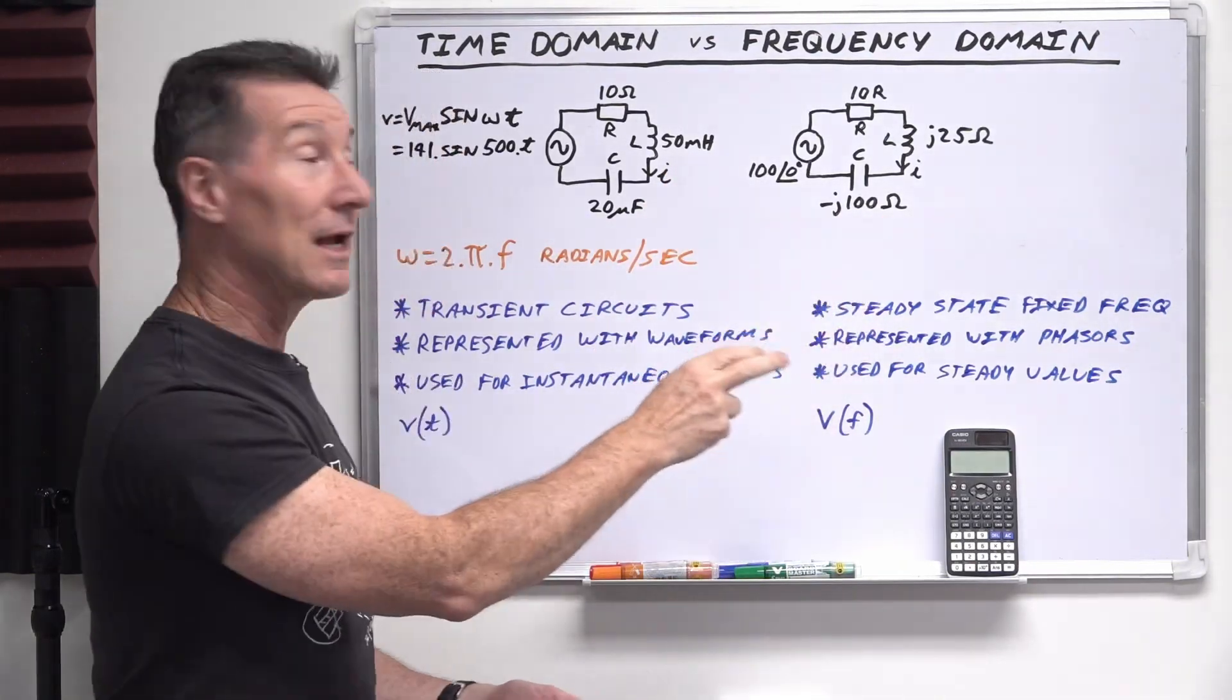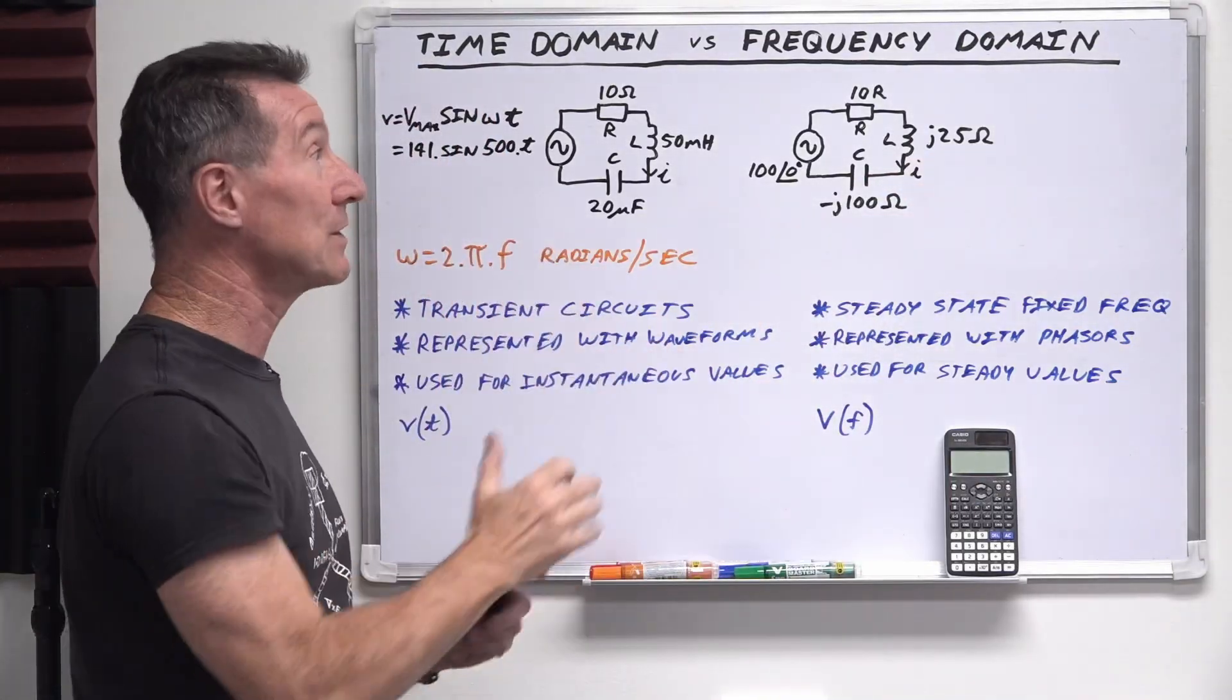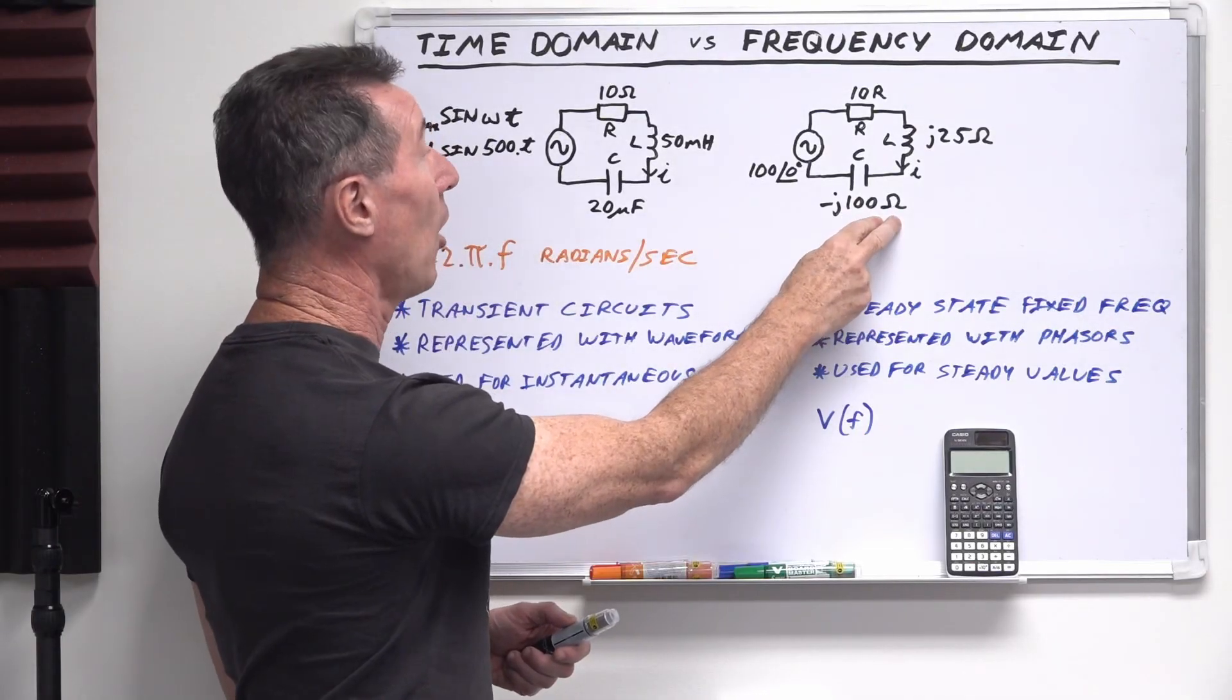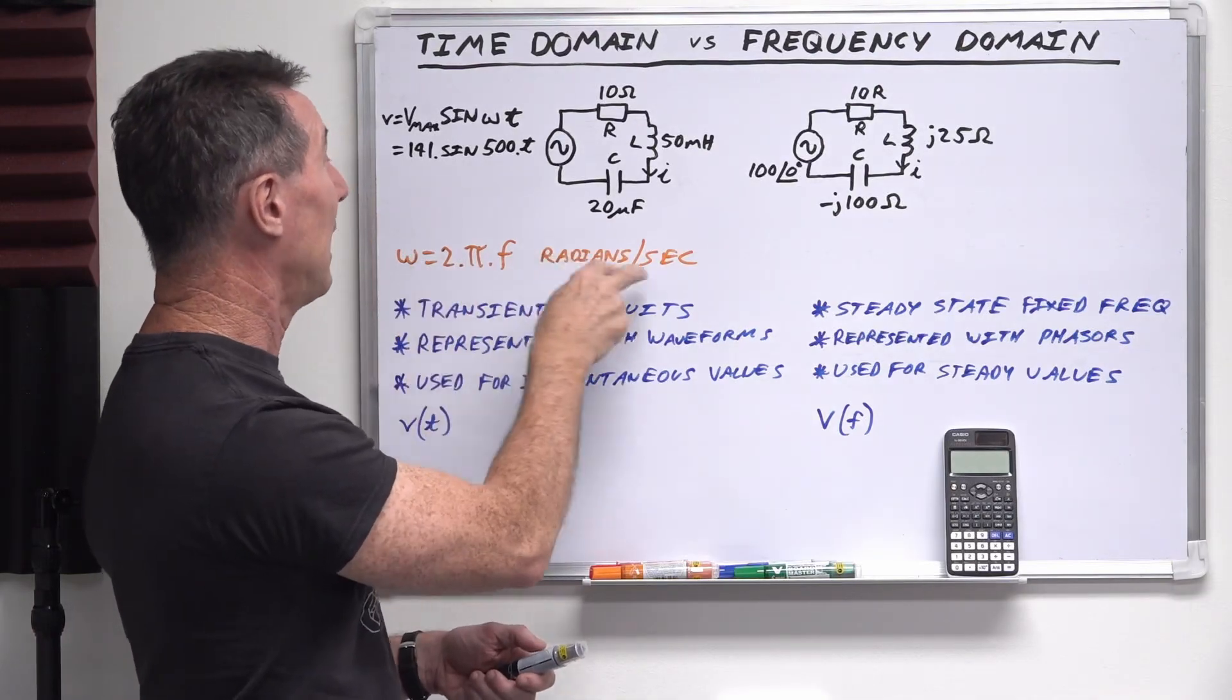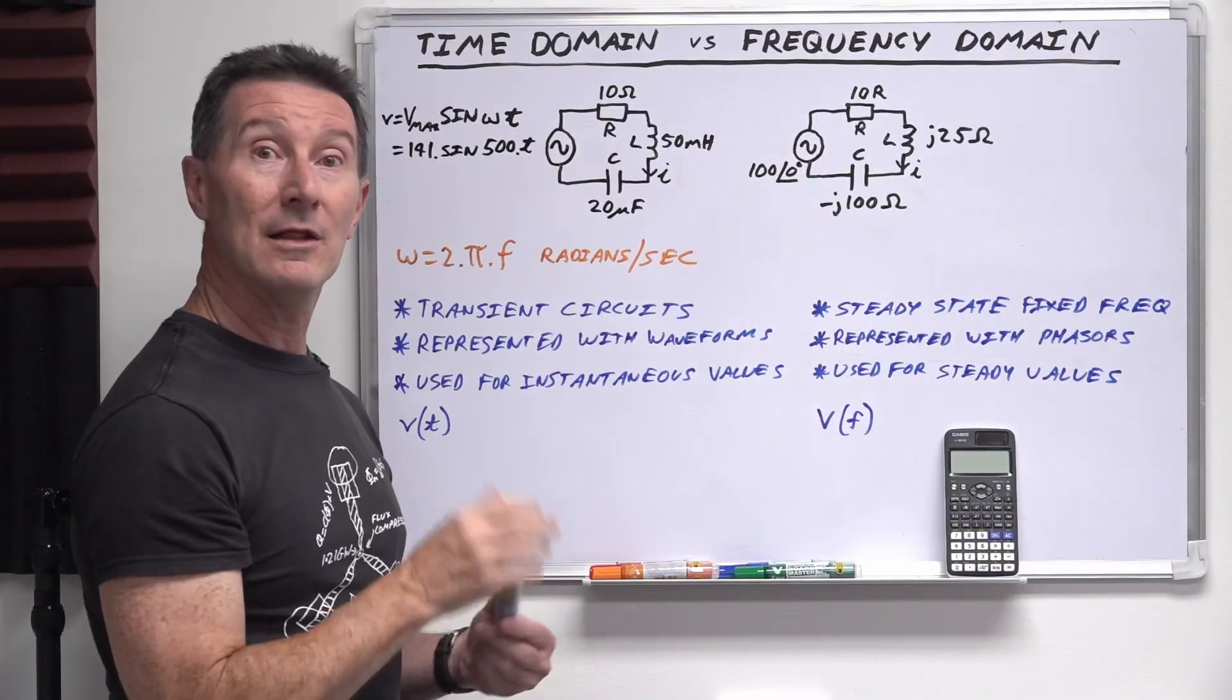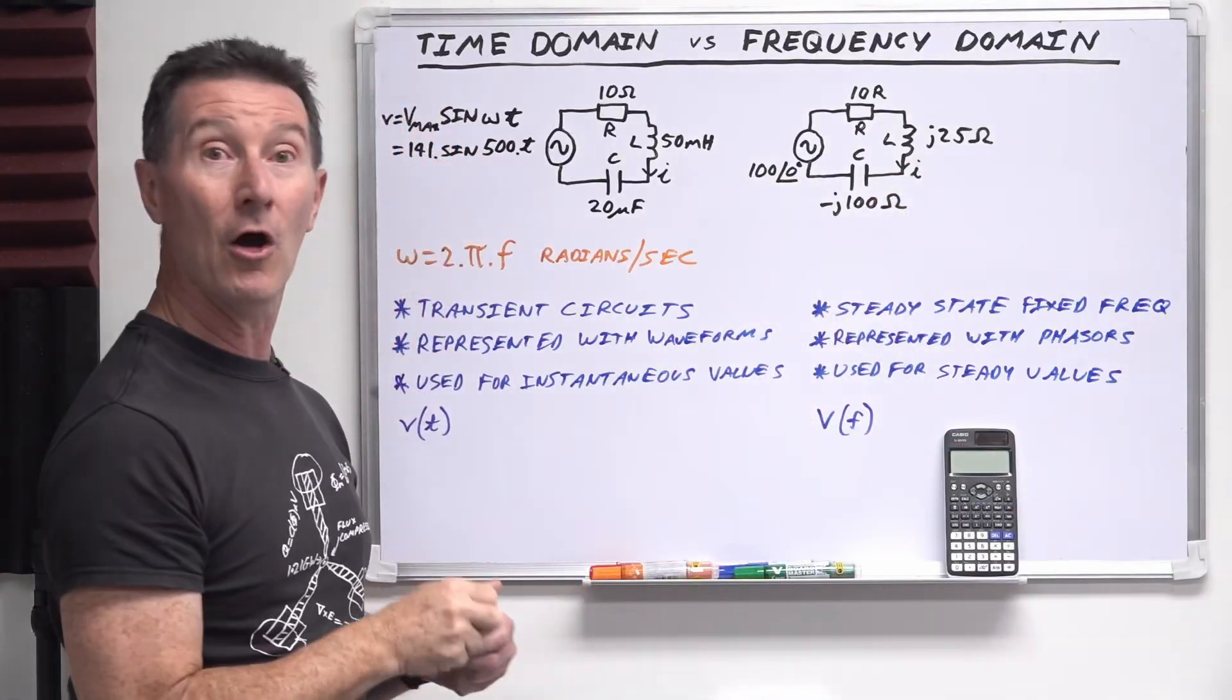We're talking in terms of capacitive reactants and inductive reactants that we looked at in the previous video. So that's a complex form. So minus J 100 ohms is equivalent to 20 microfarads at the particular radians per second that we're dealing with here.